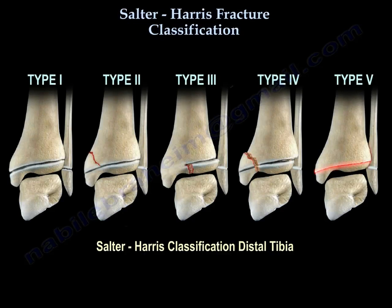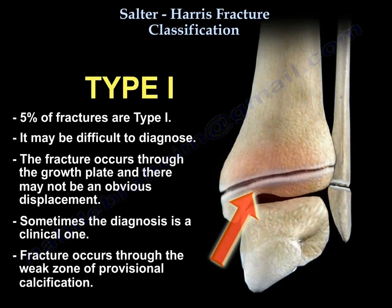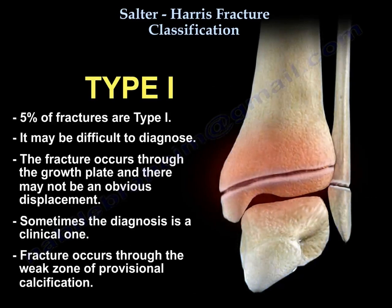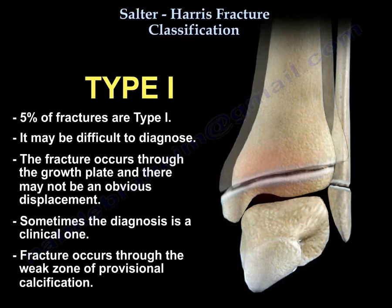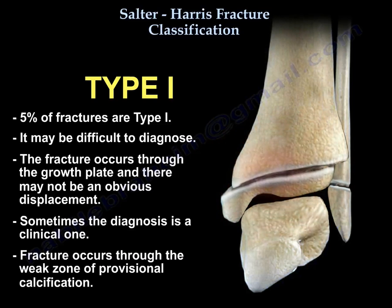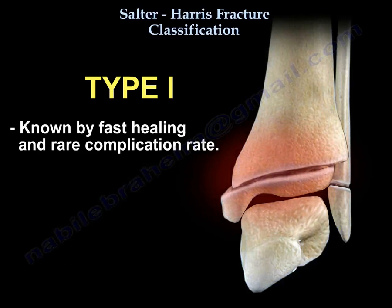Here are the five types of Salter-Harris fractures. Type 1 accounts for 5% of fractures and may be difficult to diagnose. The fracture occurs through the growth plate and there may not be an obvious displacement, so sometimes the diagnosis is a clinical one. The fracture occurs through the weak zone of provisional calcification. This fracture type is known for fast healing and a rare complication rate.